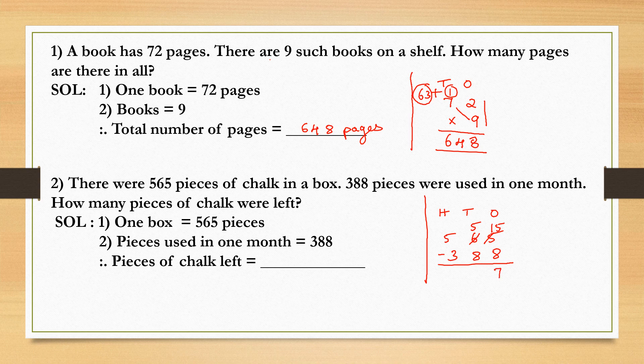5 minus 8 is not possible. Borrow 1, so 15 minus 8. 15 minus 8 again is 7. 4 minus 3 is 1. So what is the answer obtained? Pieces of chalk left equal 177 pieces.